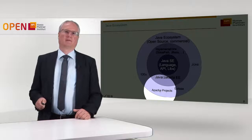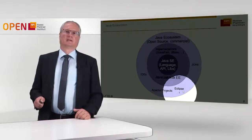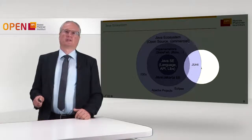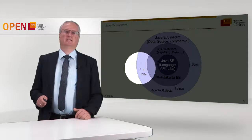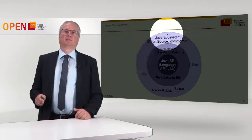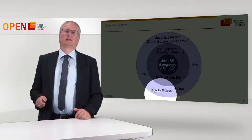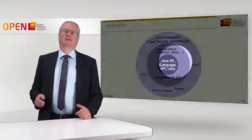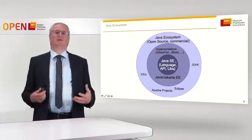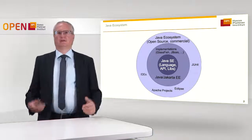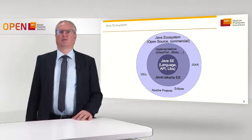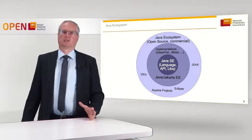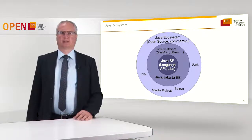Here we have the Apache projects, the Eclipse projects. We have, for example, something like JUnit. We have many different IDEs, the Spring framework, the Play framework, and so on. All together forms the Java ecosystem. If you want to use or understand Java, you should get an overview of the whole ecosystem, not only of the language itself.